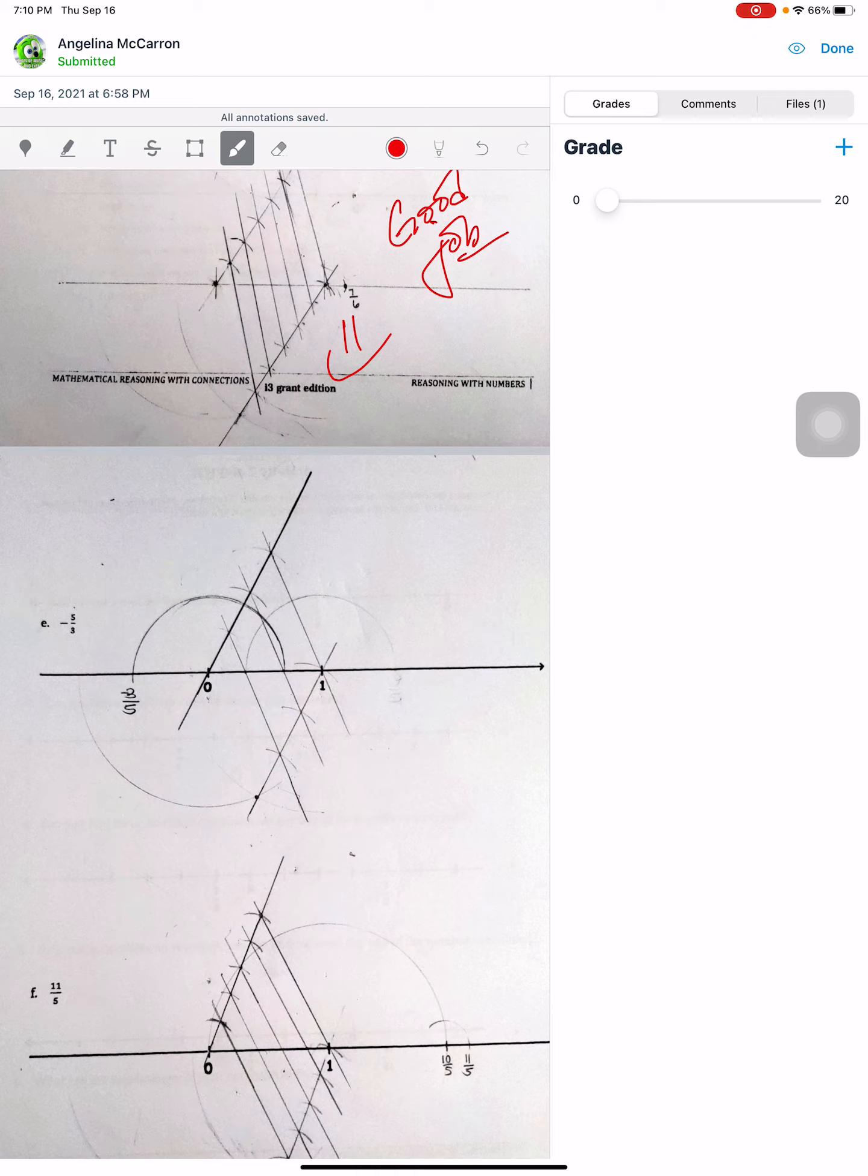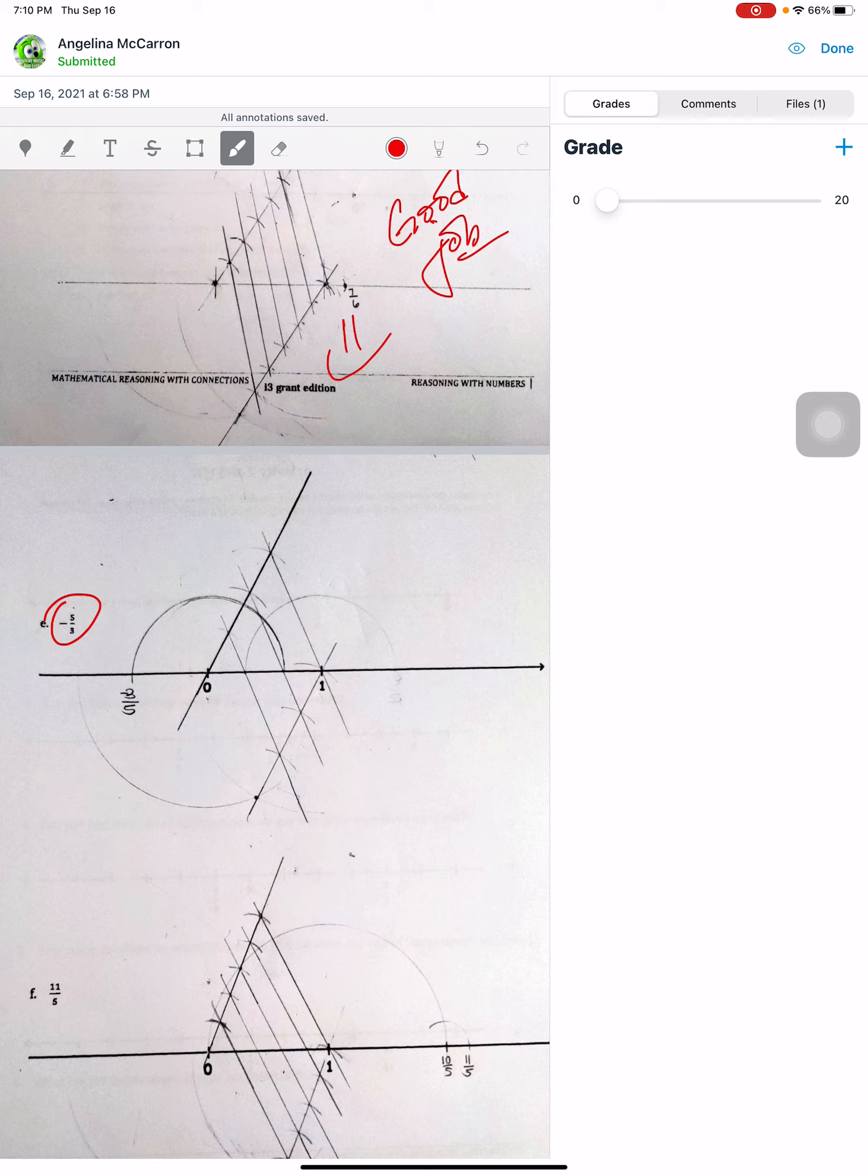You can say good job. You can give the kids some nice feedback here, whether it's good or bad. Doesn't matter. They need feedback. And this one here, they're supposed to plot negative five-thirds, but they graphed negative three-fifths. So that right there has not been graphed.